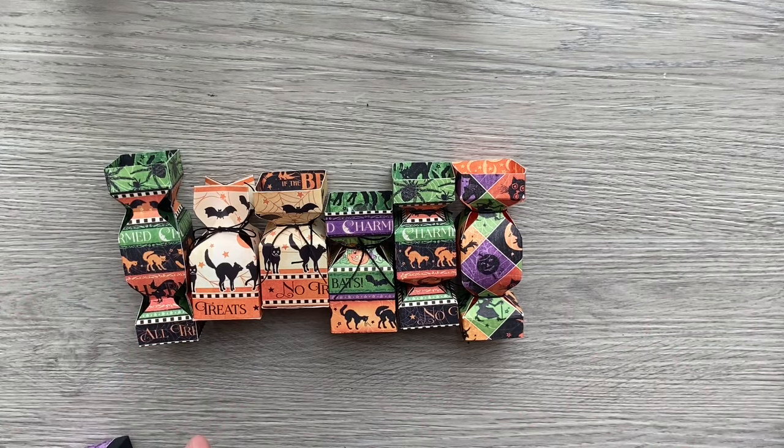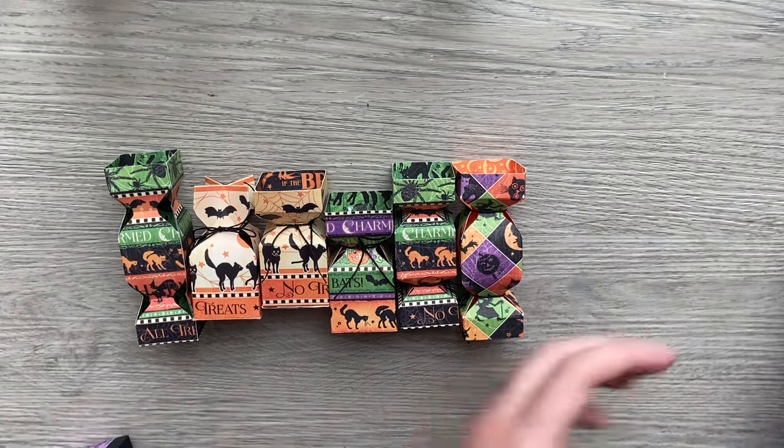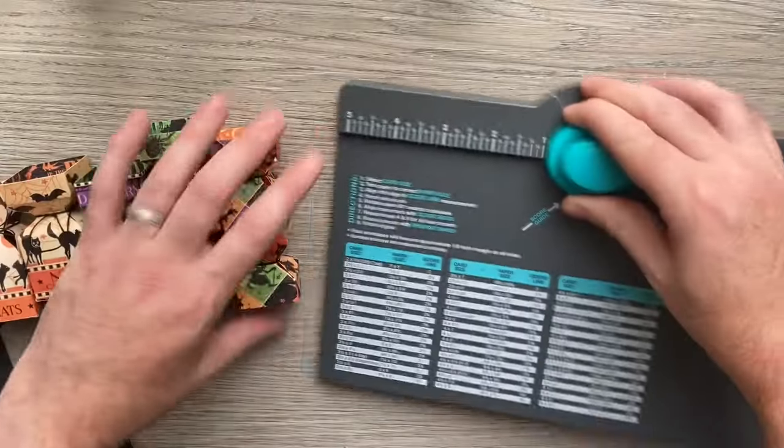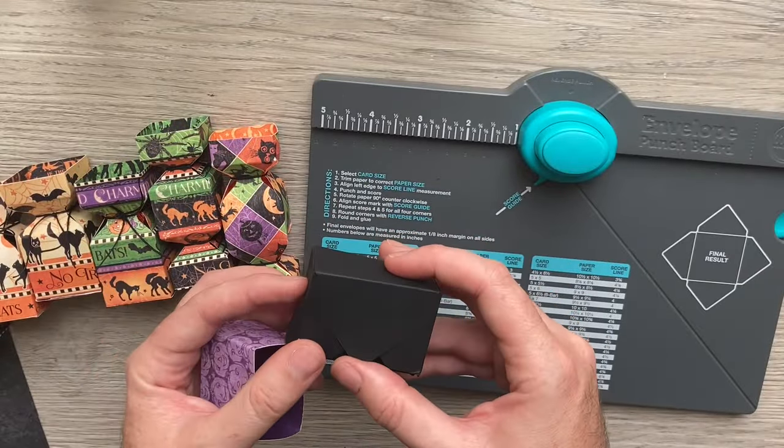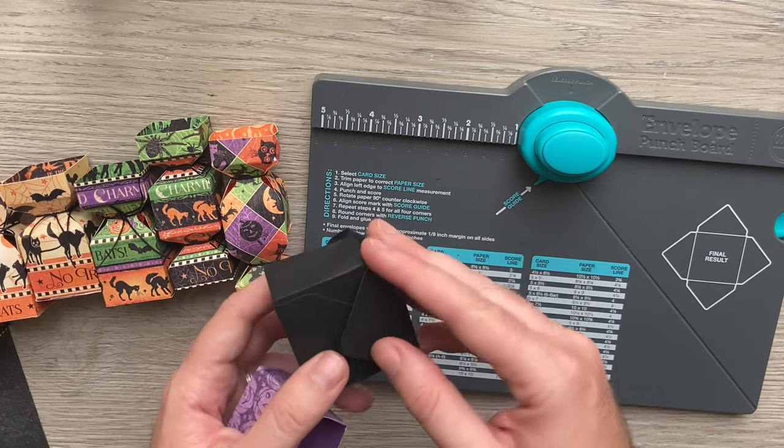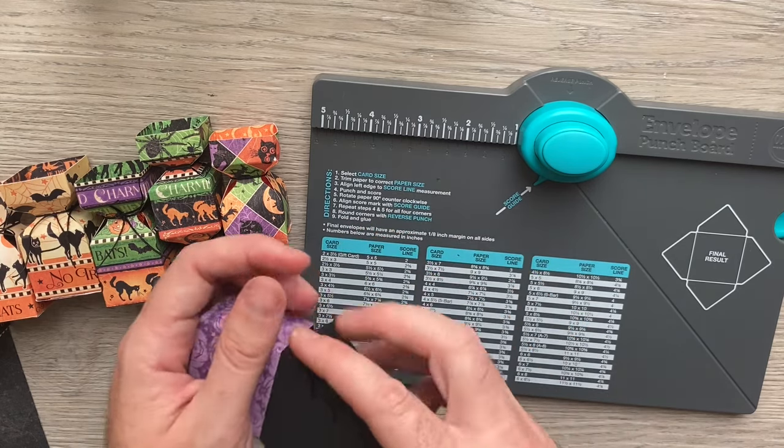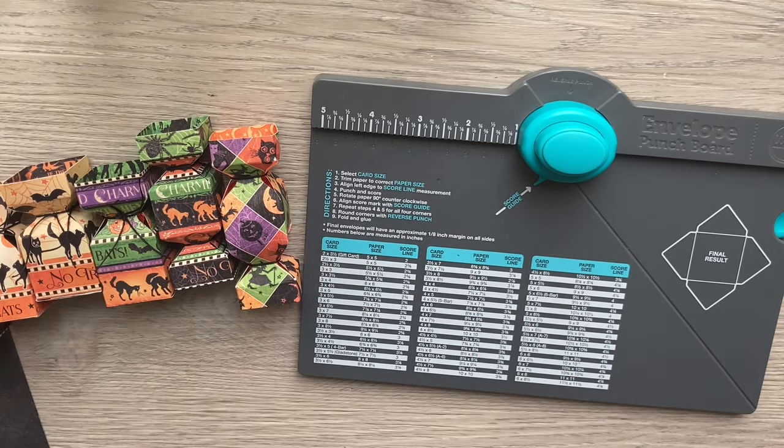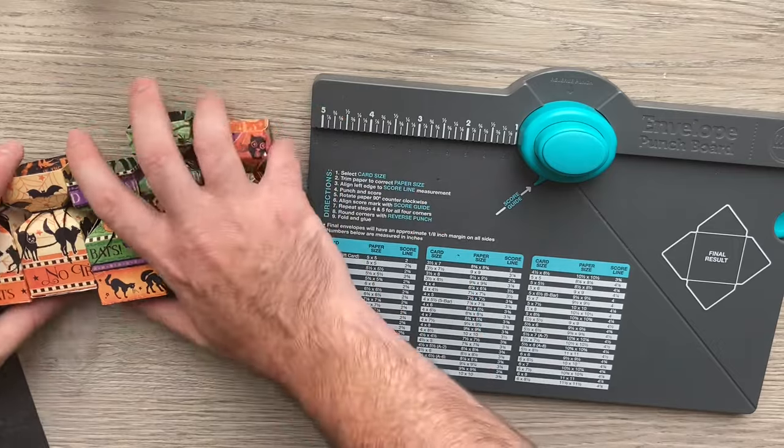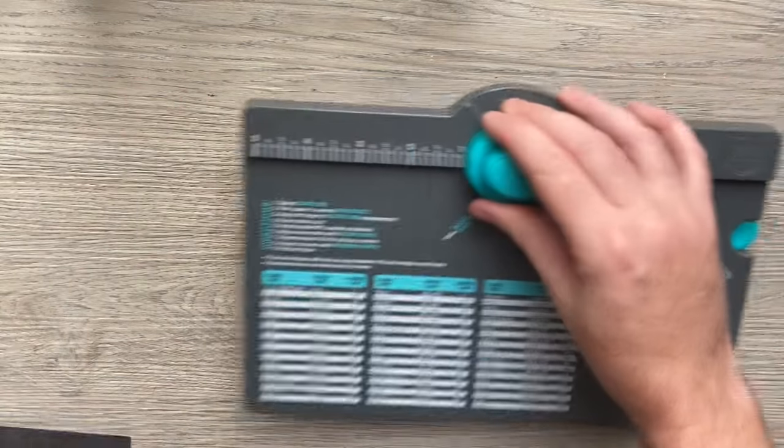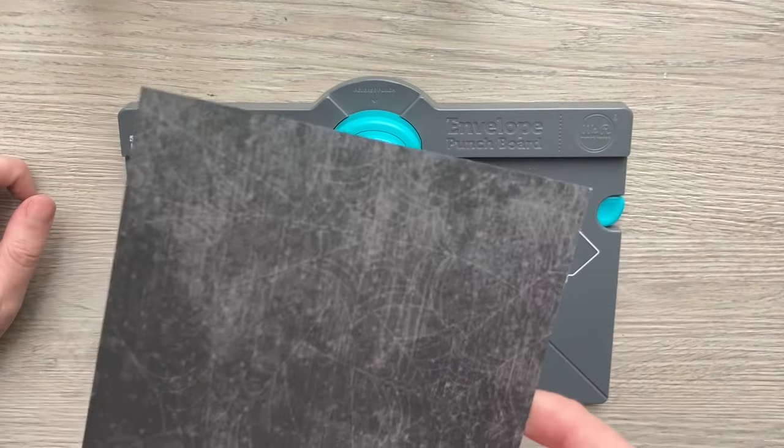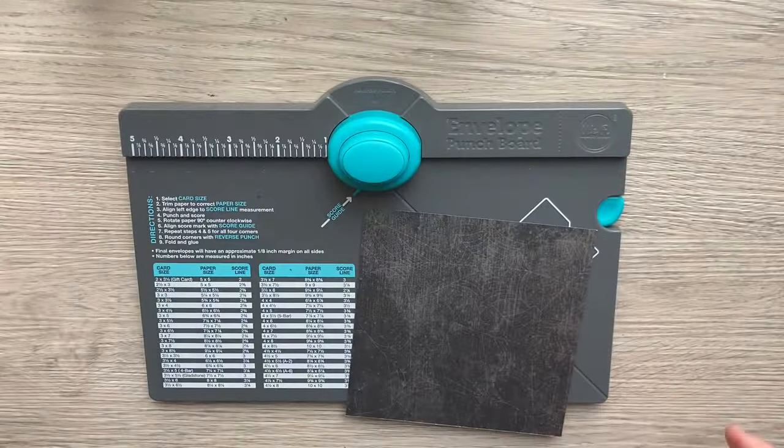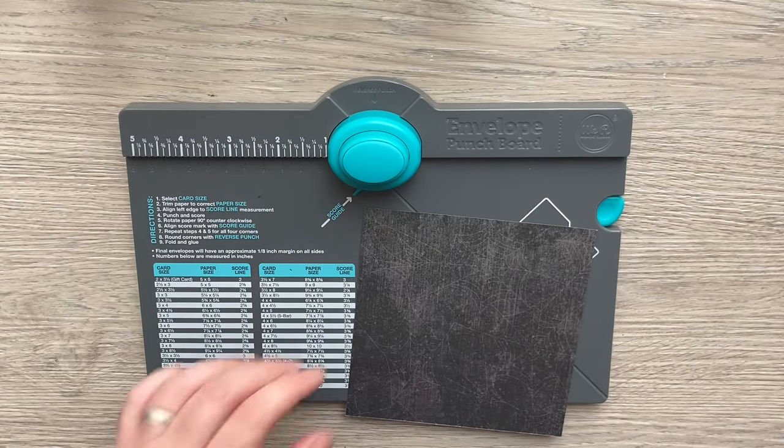Today, we're going to do something a little bit different. We're just going to use our envelope punch board and we're going to make a little box which opens up and a belly band holding it together. My original first one, I've actually made my box itself out of black cardstock. But this time, I'm going to use some of the patterns and solids from my Charmed kit by Graphic45.